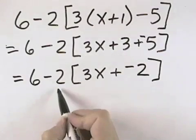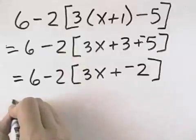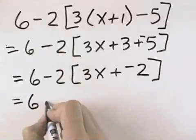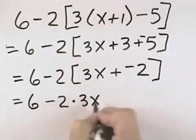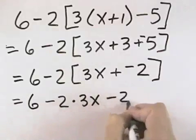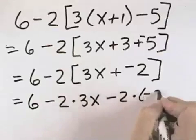We're ready to distribute the negative 2 through our brackets. So we have the 6, then we have a negative 2 times 3x, and we have the negative 2 times negative 2.